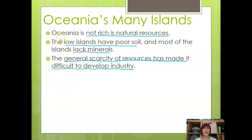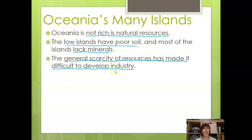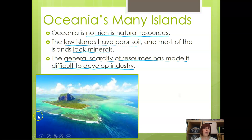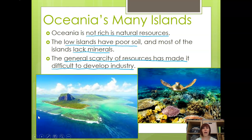Oceania's many islands are not rich in natural resources, in part because they're small and in part because of how they're formed. Low islands in particular have poor soil — you can't even grow things on some of those islands without a great deal of fertilizing. These islands also lack minerals, so there's a general scarcity of resources that has made it difficult to develop industry. Tourism is one of the industries they've relied on, in part because there aren't many other opportunities available.